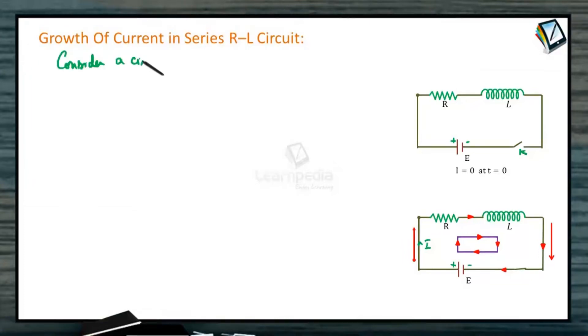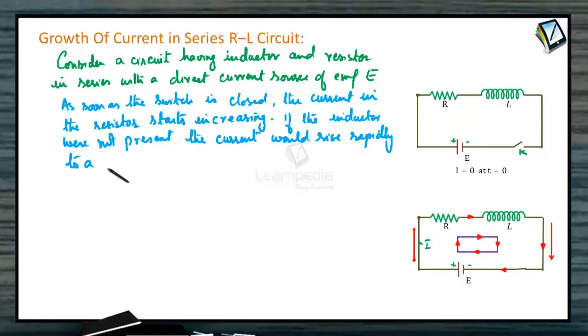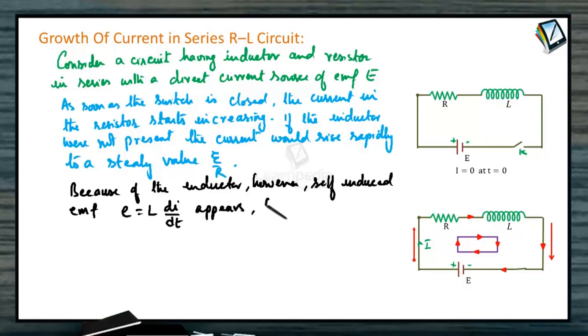Consider a circuit having inductor and resistor in series with a direct current source of EMF E. As soon as the switch is closed, the current in the resistor starts increasing. If the inductor were not present, the current would rise rapidly to a steady value E by R. Because of the inductor, however, self-induced EMF E equals L di by dt appears. From Lenz's law, it is in the opposite direction. This EMF opposes the rise of the current.